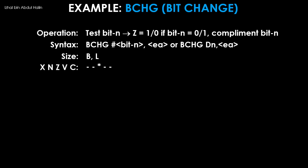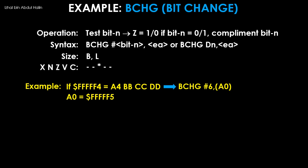In this example, four bytes of data stored at FFF4 is shown. A0 contains FFF5. When BCHG #6,(A0) is executed, register A0 points to address FFF5. The byte value at this address is BB.